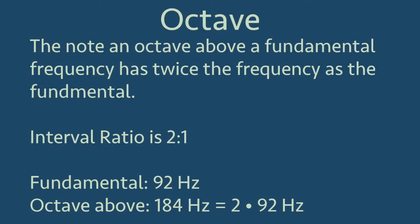The octave has a frequency that is twice as much as the fundamental frequency, and we can say that the two frequencies have a ratio of two to one. What this means is if I take the fundamental frequency and multiply by two, I get the frequency of the octave above.